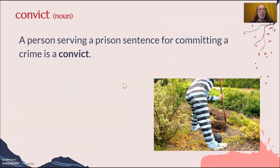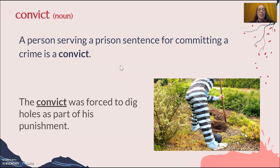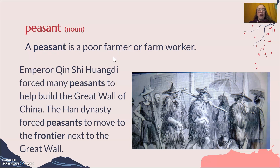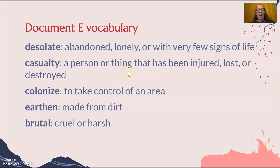Before we get on with the document, remember a convict is a person who is serving a prison sentence for committing a crime. Convicts are sometimes forced to do work like building the Great Wall of China. We also have peasants in this document — a peasant is a poor farmer or farm worker. Emperor Qin Shi Huangdi forced many peasants to help build the Great Wall, and the Han dynasty forced peasants to move to the frontier next to the wall.